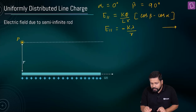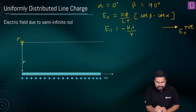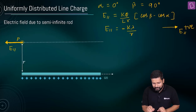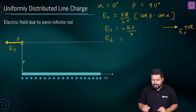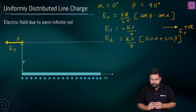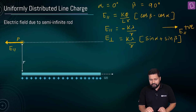If you remember, in the case of a finite rod, we took a specific direction as the parallel component and that direction as positive. So getting minus kλ/r means the parallel component is directed opposite to that assumed positive direction. Now for the perpendicular component: E_perpendicular equals kλ/r times (sin α + sin β). Substituting alpha equals zero, sin(0°) equals zero, leaving kλ/r · sin β.